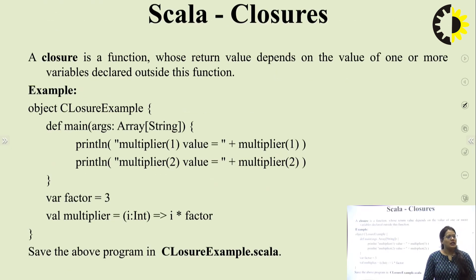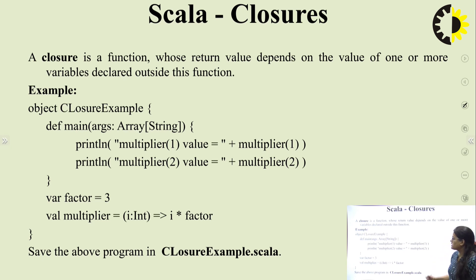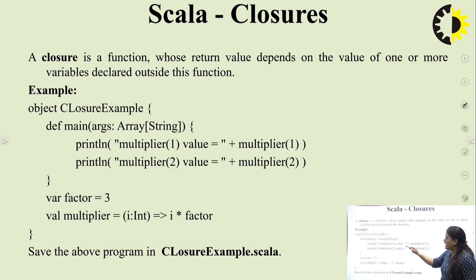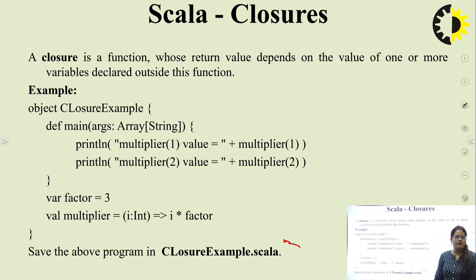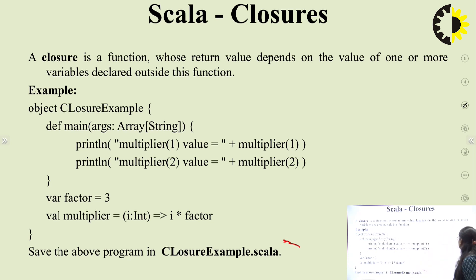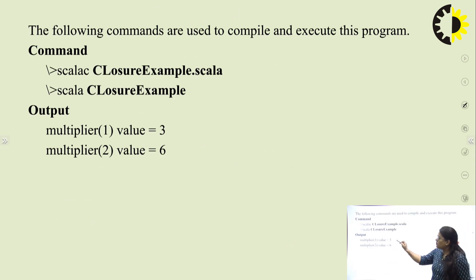Next is Scala closure. A Scala closure is a function whose return value depends on the value of one or more variables declared outside this function. In this example, the main method calls println(multiplier(1)) and println(multiplier(2)), where factor = 3. The multiplier is defined as: val multiplier = (i: Int) => i * factor. So the output will be 1 * 3 = 3 and 2 * 3 = 6.